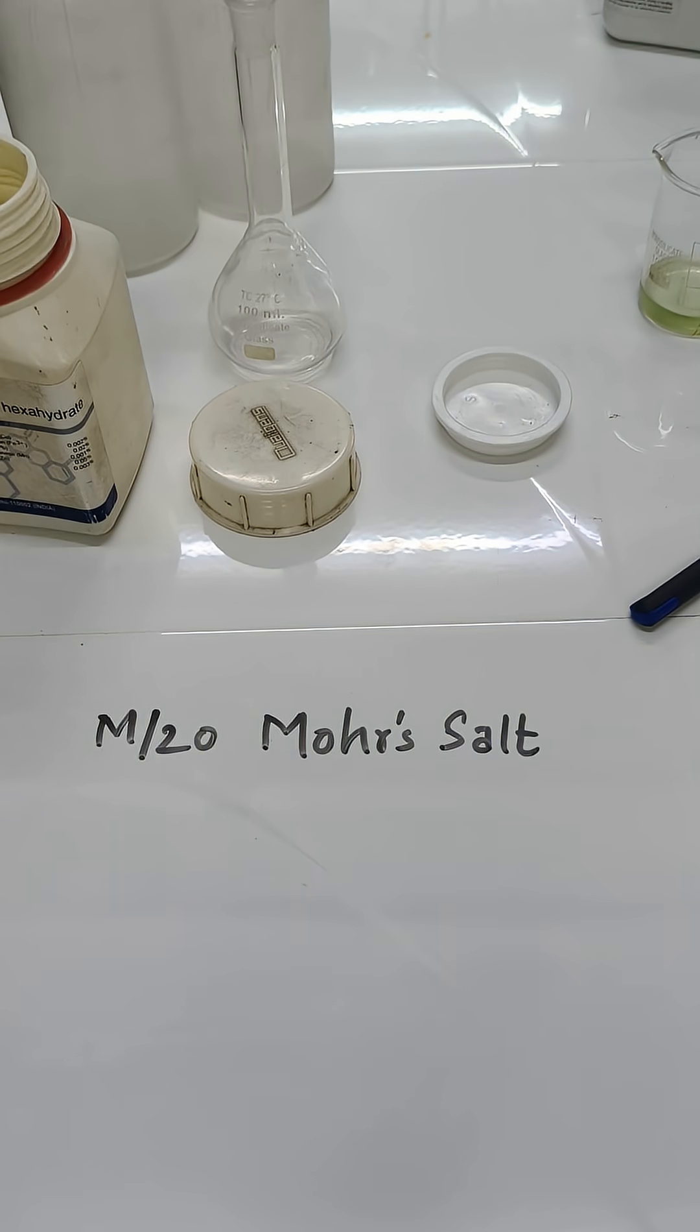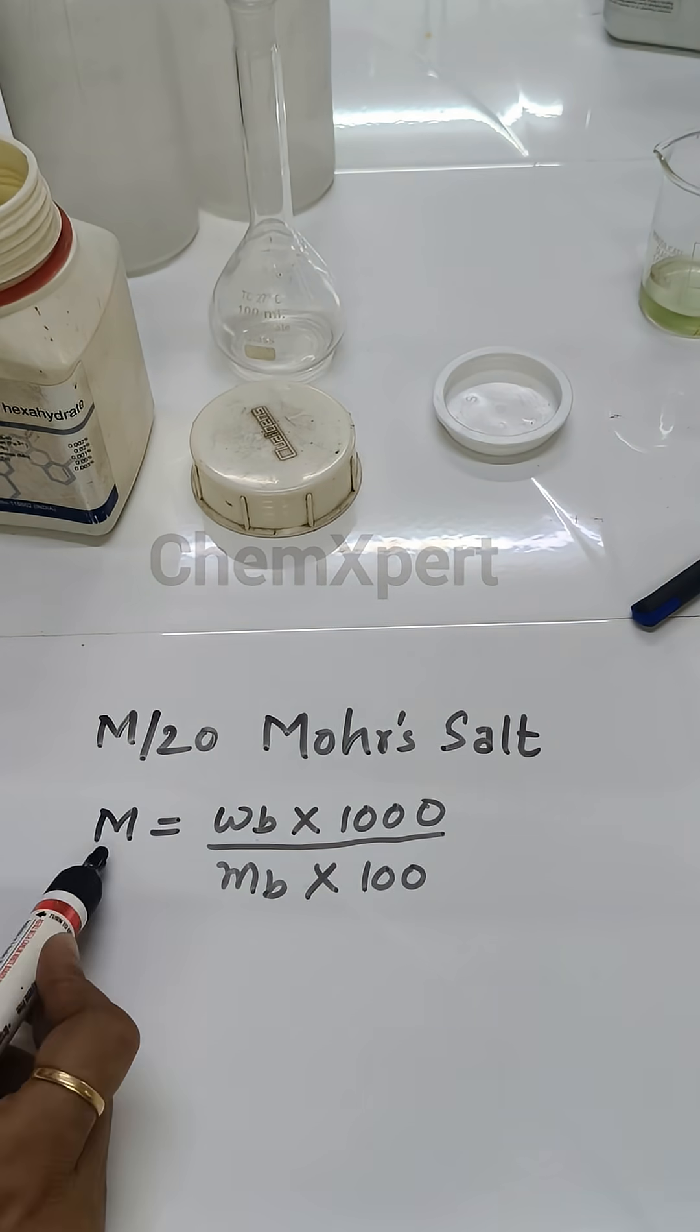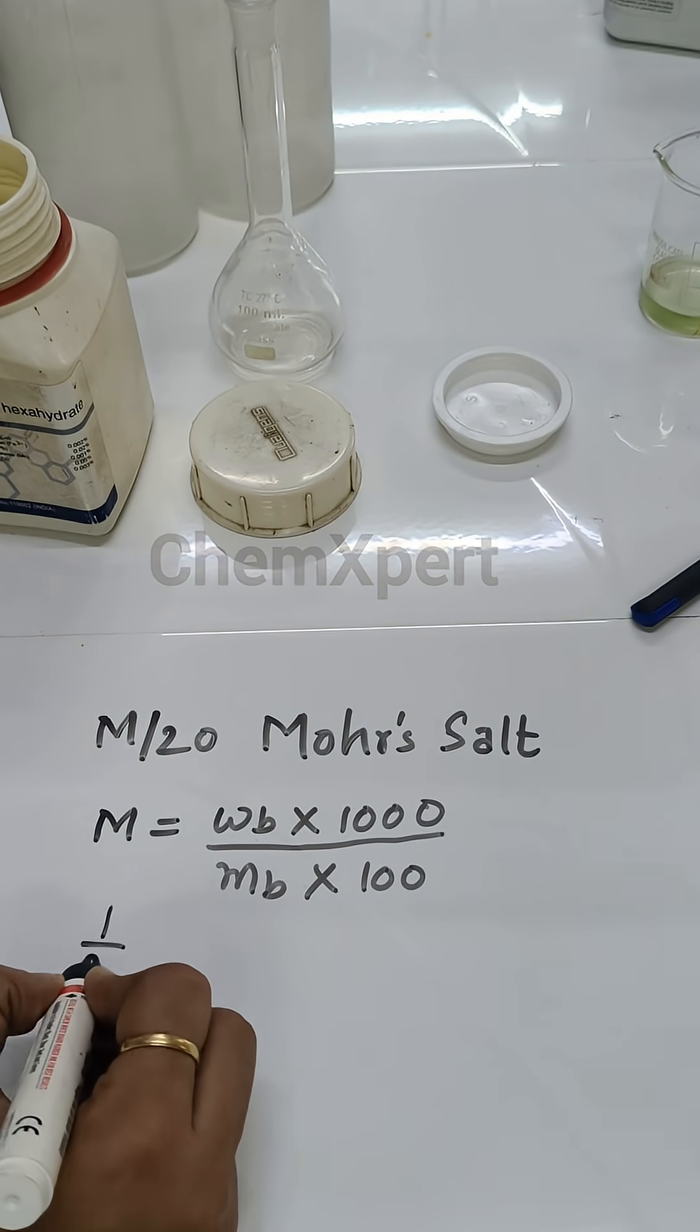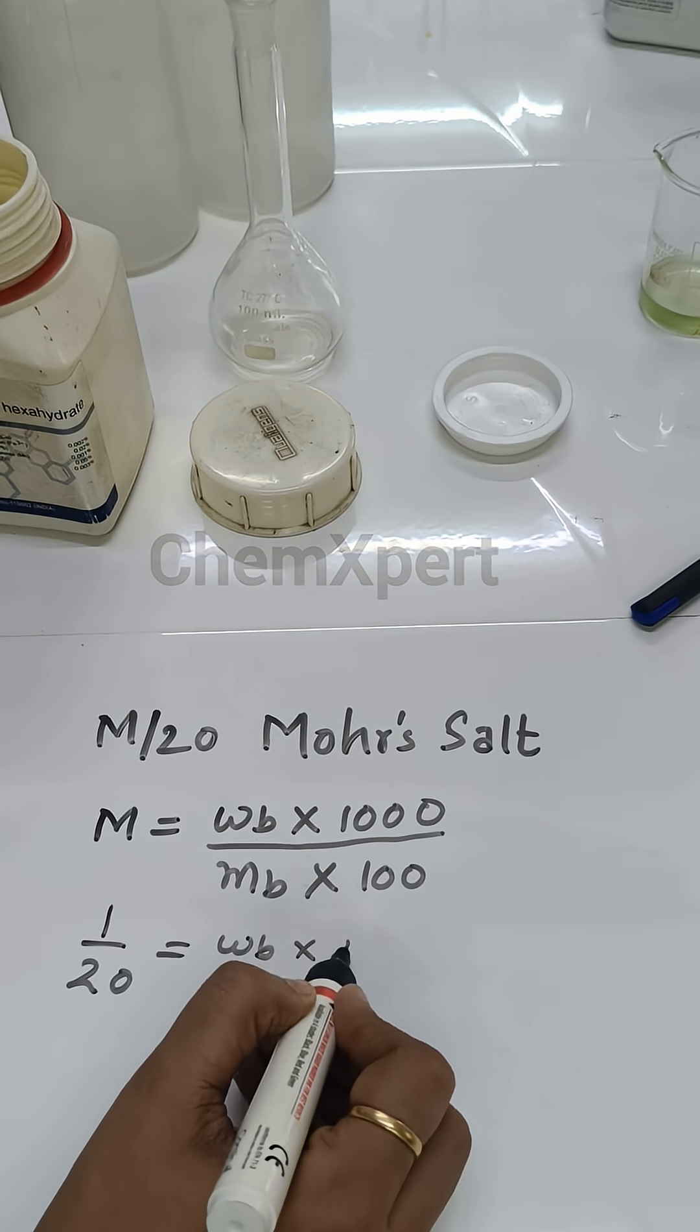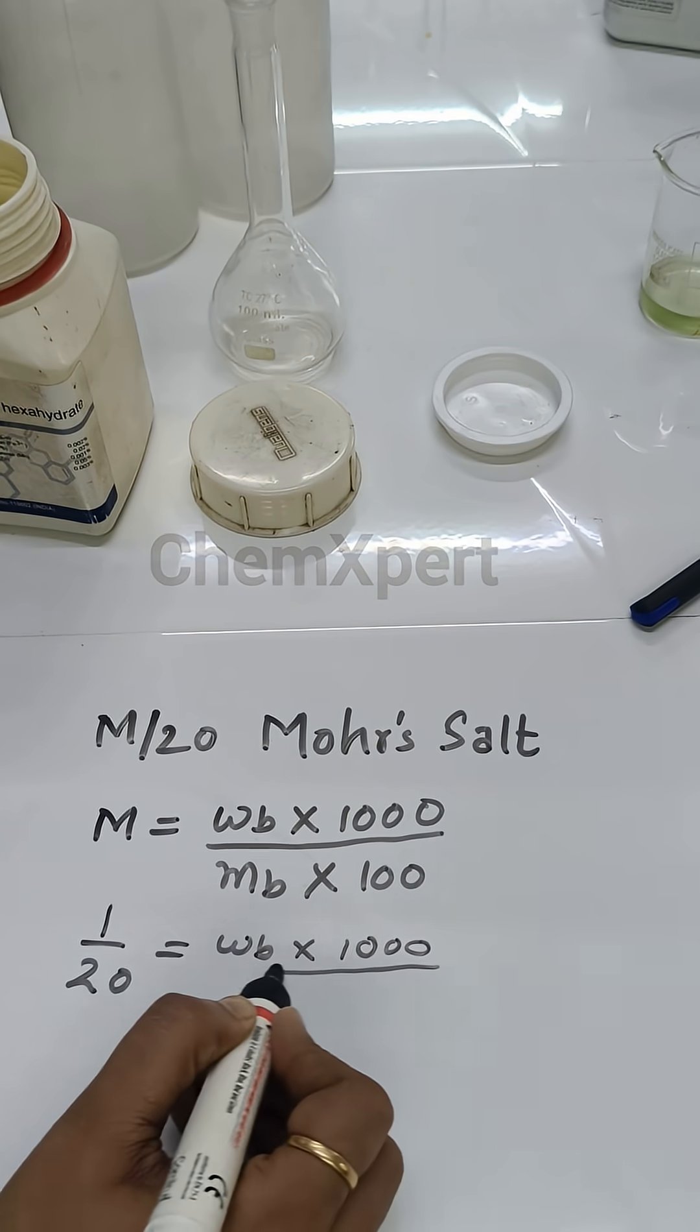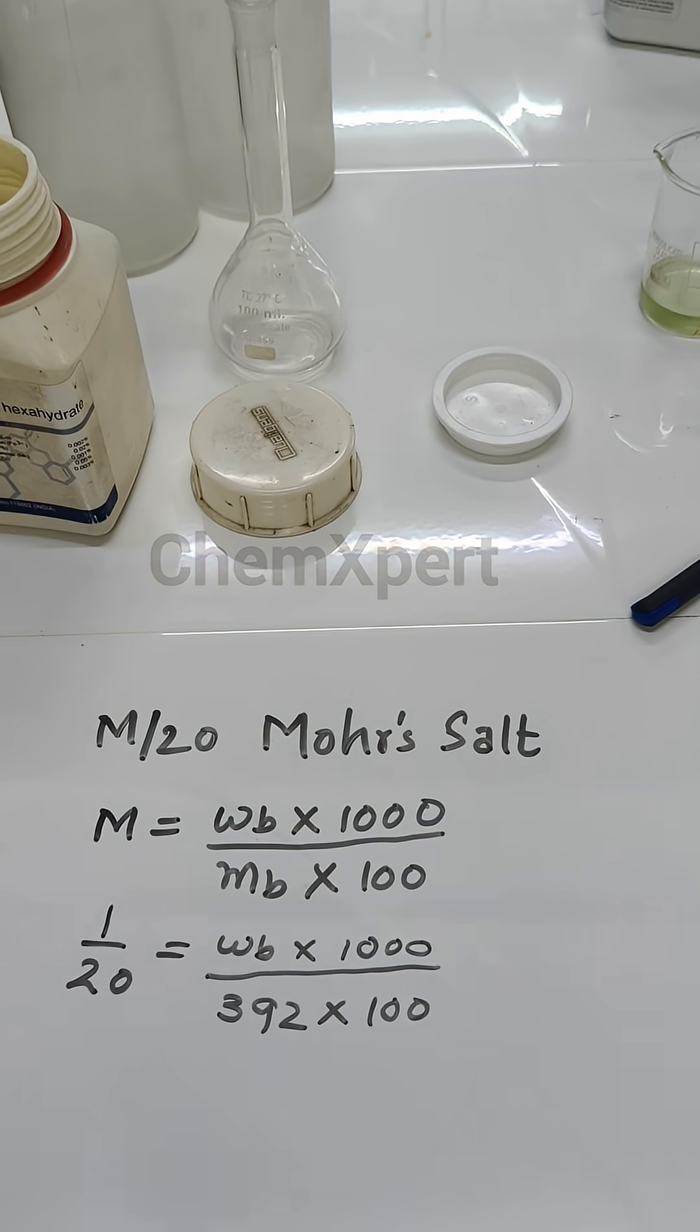In this video we prepare M by 20 Mohr Salt solution. The formula for this is M equals WB times 1000 divided by Mb times 100, where M is 1 by 20, which is equal to weight which we have to calculate times 1000, divided by Mb, the mass of Mohr Salt which is 392, and the 100 ml in which we have to prepare this solution.